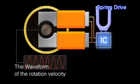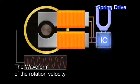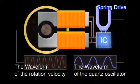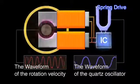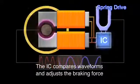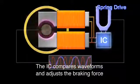The IC compares the velocity waveform of one complete rotation of the rotor against the accurate waveform of the quartz oscillator and then adjusts the braking force to make the rotation of the rotor exactly match the accurate waveform of the quartz.